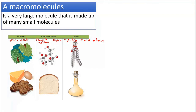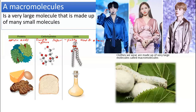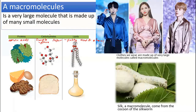When small molecules like amino acids join together, they become a large molecule also known as proteins. So proteins are a kind of macromolecule. Proteins, carbohydrates, and lipids are examples of macromolecules. The clothes we wear are also made of very large molecules — macromolecules. For example, silk is a macromolecule that comes from the cocoon of the silkworm.